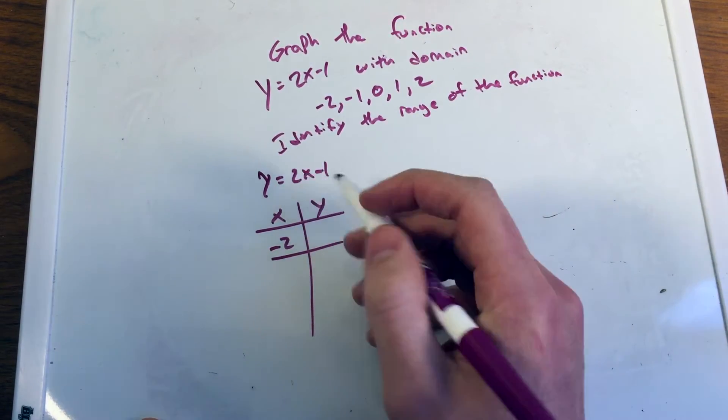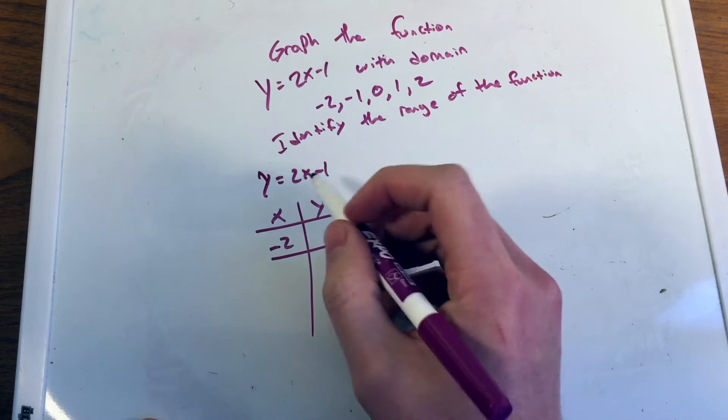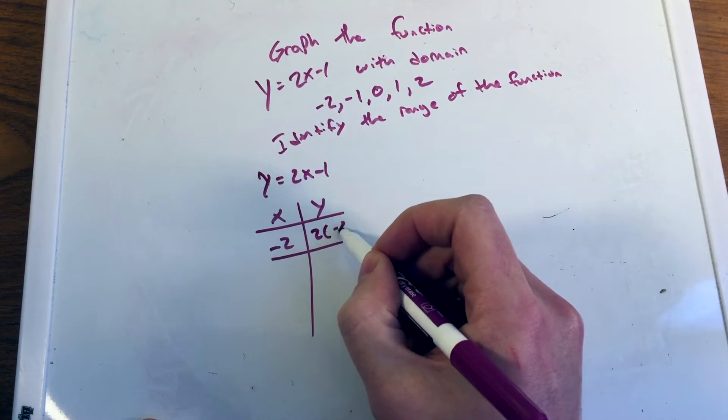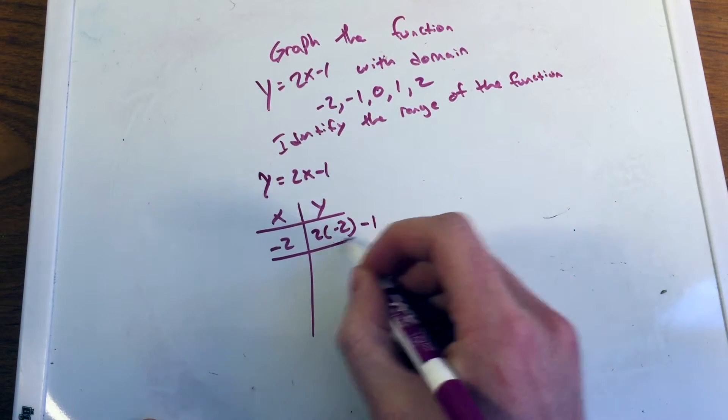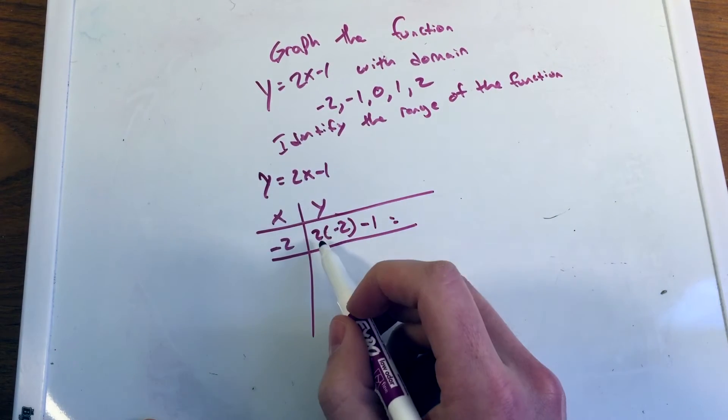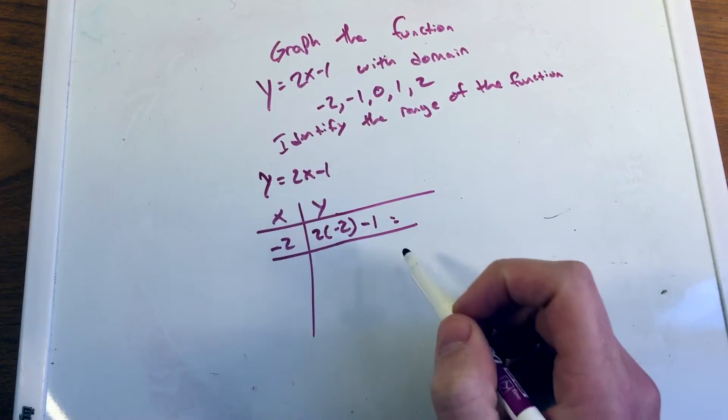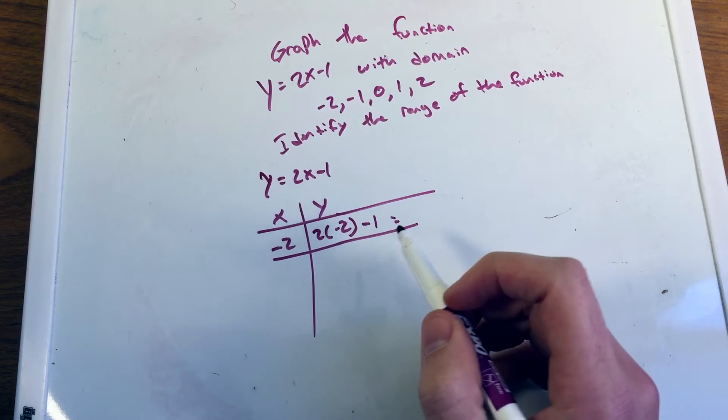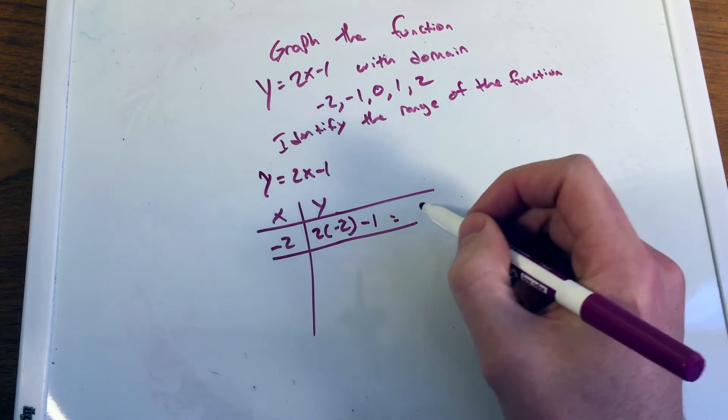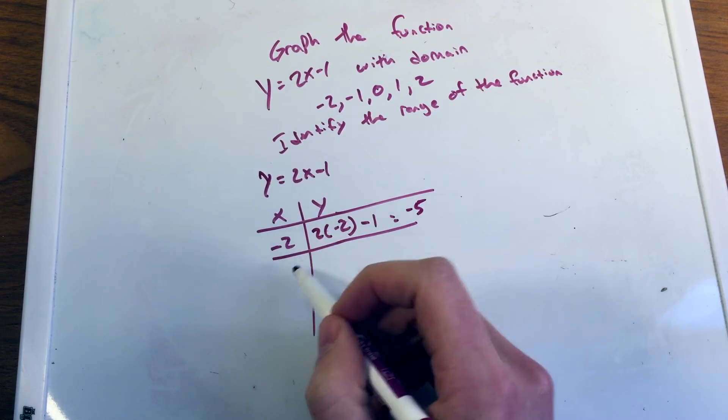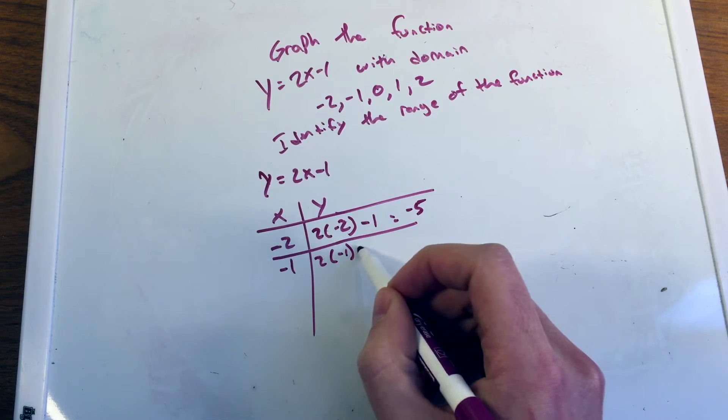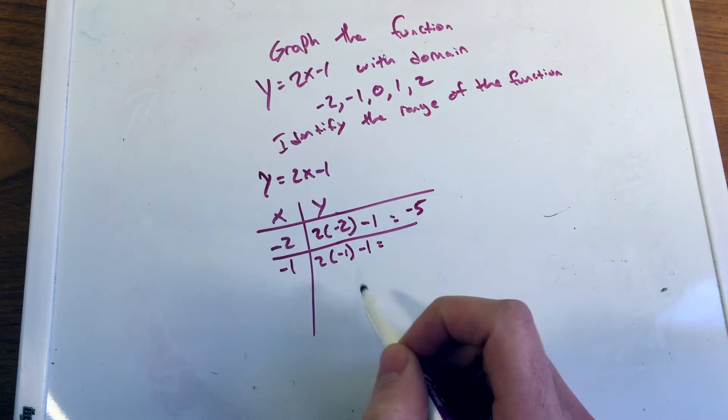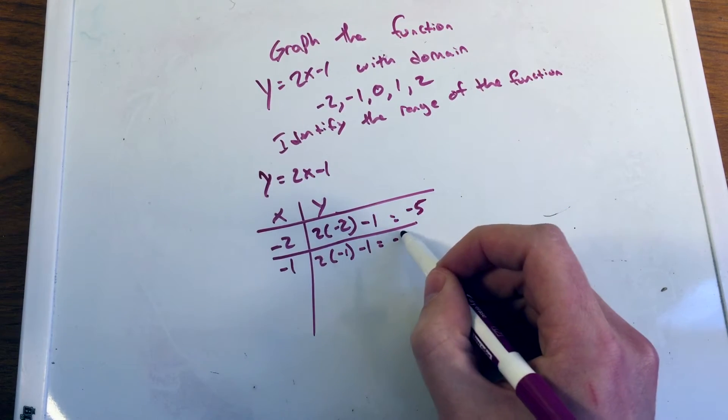So if I'm plugging negative 2 in for x of this equation here, I have 2 times negative 2, I'm substituting that negative 2 in for x minus 1. And now I'm left with 2 times negative 2 is negative 4 minus 1. Negative 4 minus 1 comes out to be negative 5. If I plug in negative 1 in for x, I'm going to get 2 times negative 1 minus 1. 2 times negative 1 is negative 2 minus 1 is negative 3.